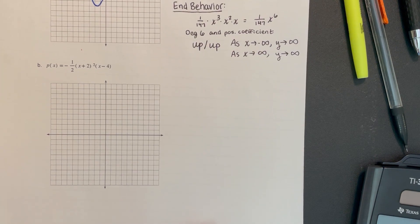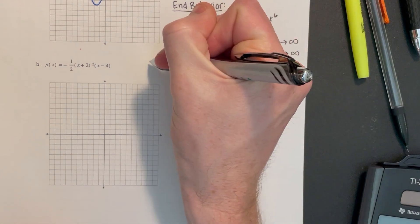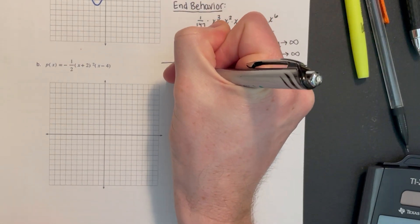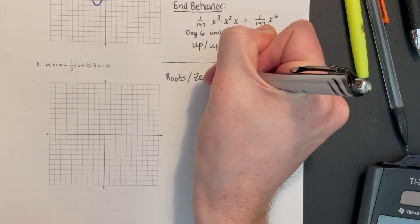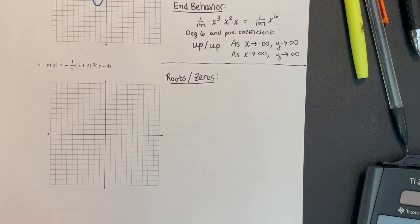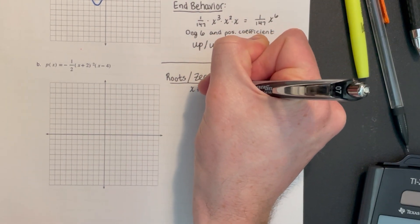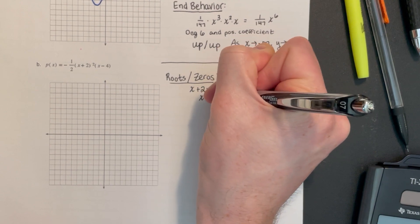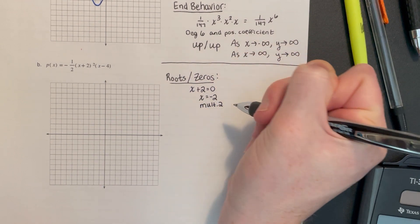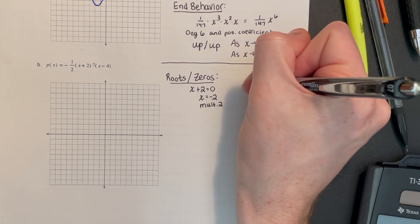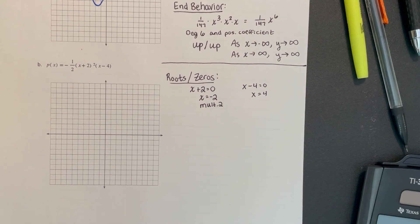This next graph, we'll start again with identifying the roots. If I ever call these zeros, those are the same thing. They're also x-intercepts because I can find them nicely on the x-axis. So x plus 2 equals 0 gives me an x-intercept at -2. It is multiplicity 2 because it was squared. And x minus 4 equals 0 has a root at 4. Its multiplicity is just 1.